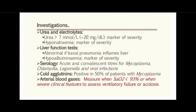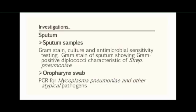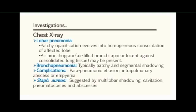Arterial blood gases are calculated to assess the severity of the disease. Sputum samples are taken for Gram staining, which allows characterization of the type of bacteria — for example, whether it is Streptococcus pneumoniae or a viral infection. Oropharyngeal swabs and PCR (polymerase chain reaction) for Mycoplasma pneumoniae and other atypical pathogens are also performed.